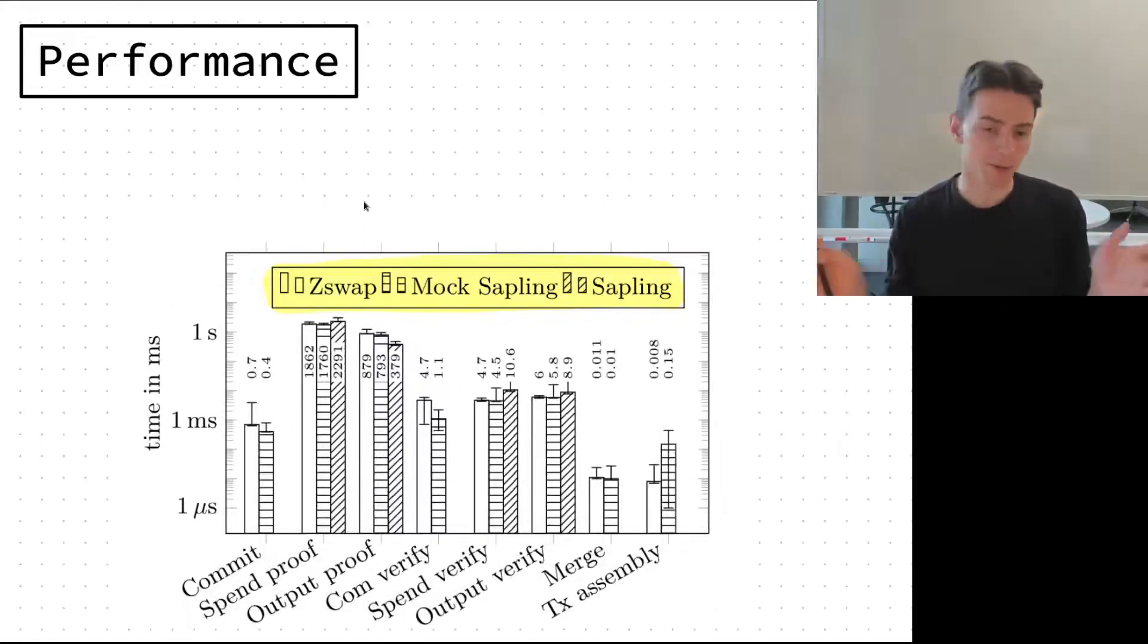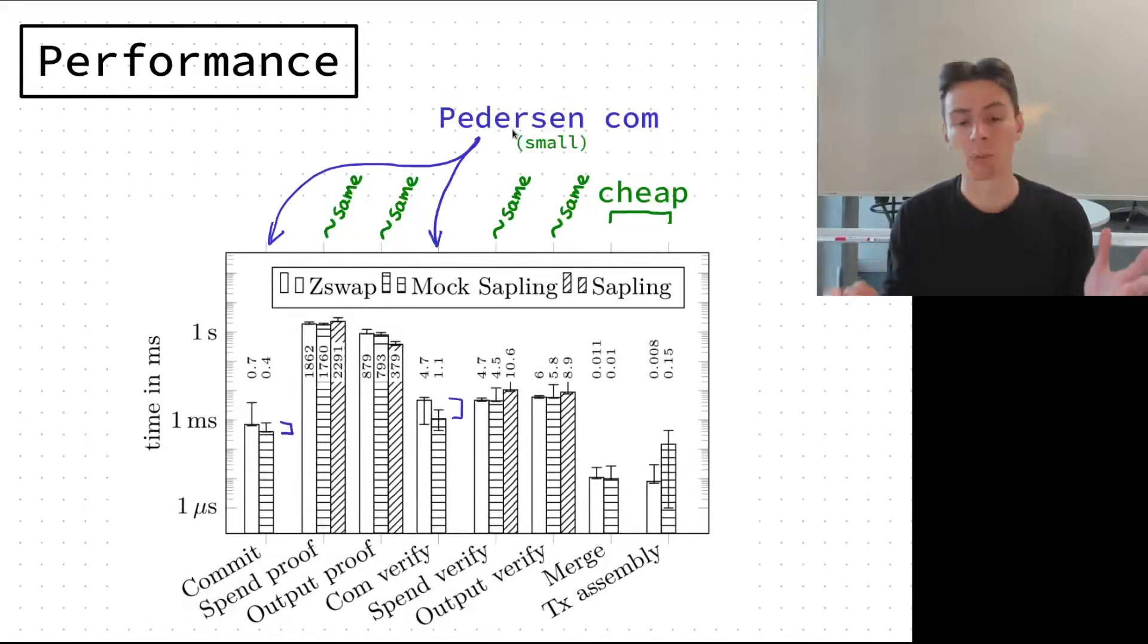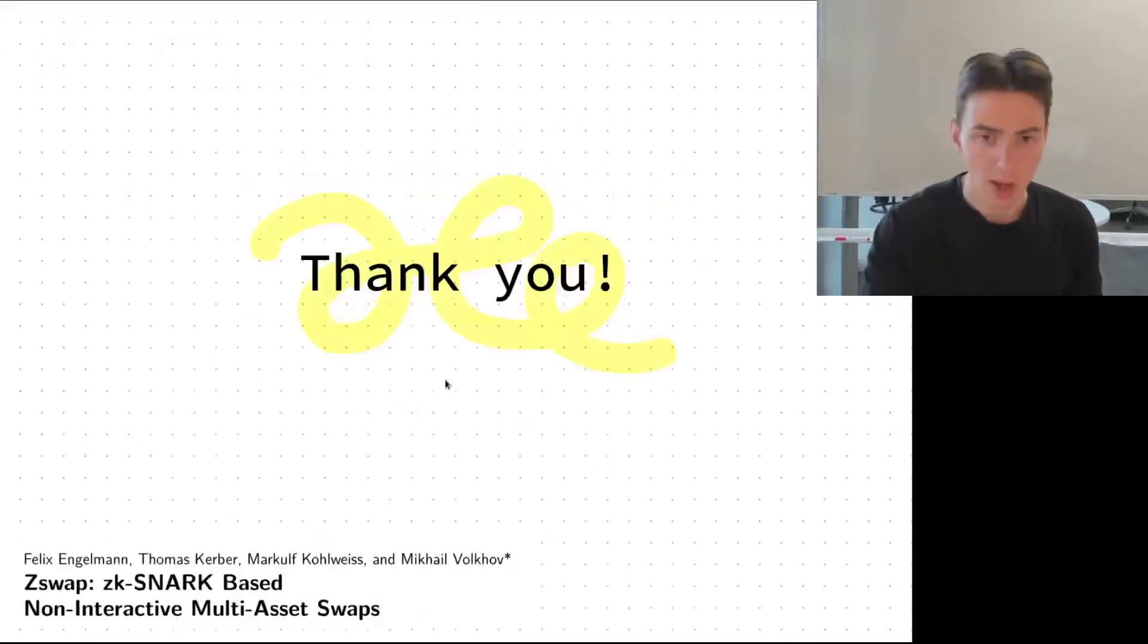The performance of our system is very close to the basic Zcash, it's quite efficient. This table compares this work with our implementation Sapling and the basic Sapling. For generating spend and output proofs and verifying them, the amount of time spent is pretty much the same. Merging transactions and creating them is extremely cheap. The only noticeable difference is creating and verifying commitments because the Pedersen commitment scheme is a bit more complicated, but the overhead is still very small. And that's pretty much it, thank you.